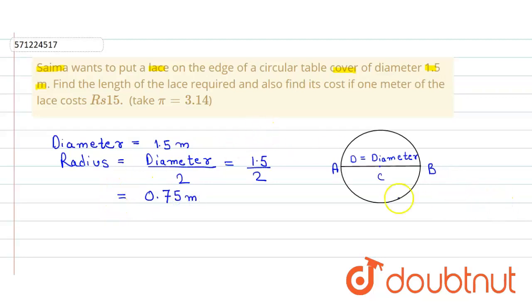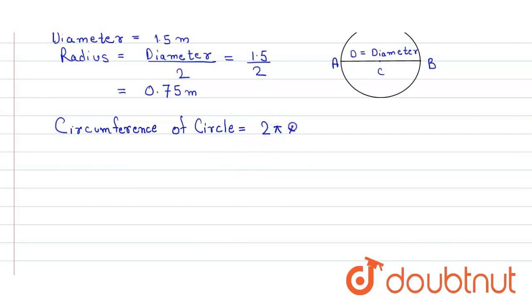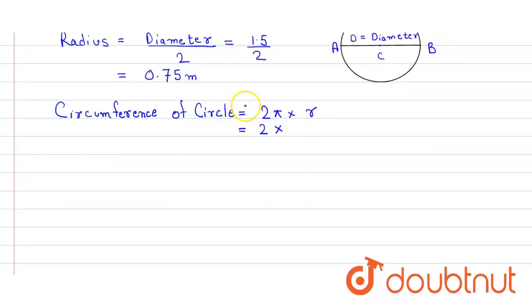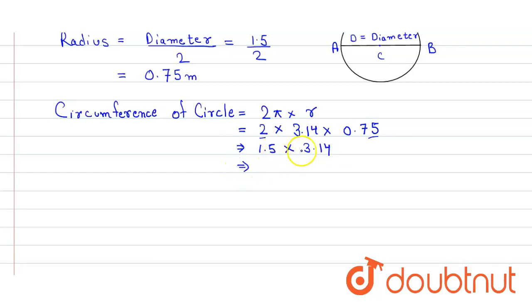Now we have to find the length of the lace, so we first calculate the circumference of the circle. The formula is 2πr. Substituting the values: 2 into 3.14 into 0.75. This gives 1.5 into 3.14, which equals 4.71 meters.